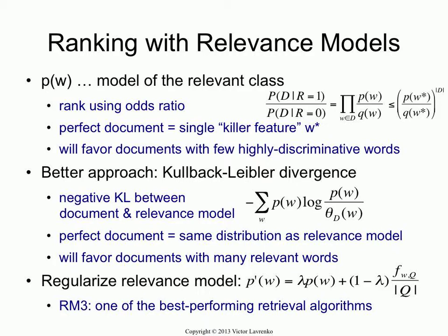One way to see that is to ask yourself: for this ranking function, what is going to be the perfect document? It depends on document length, so assume that out of all documents of a fixed length, which document would get the highest score? You should be able to convince yourself that this is maximized when you have a document consisting of a single killer feature — a single word that is most discriminative. If you pick a word w which has the maximum ratio between pw and qw, and repeat that word d times where d is the document length, that gives you a higher score than any other document in the collection.